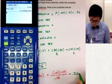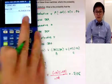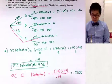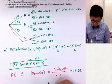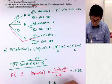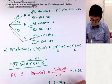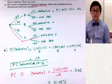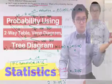So this is how we compute probability using three methods: the Venn diagram, the two-way table, and the tree diagram.